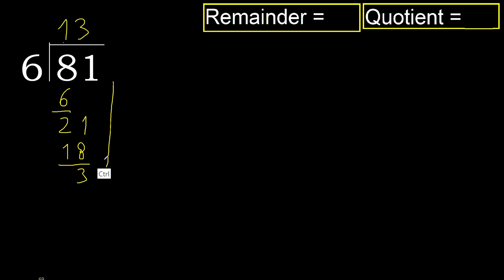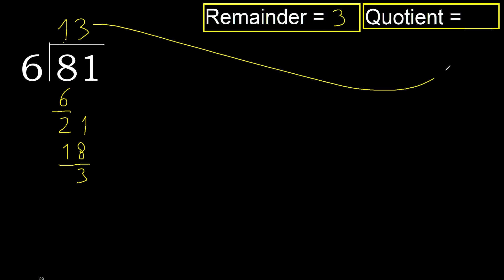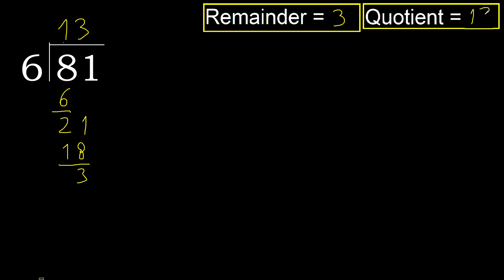There is no next number, therefore finish it. Ok, there is no next number — finish it. The answer is 13 remainder 3.